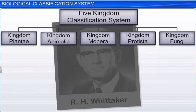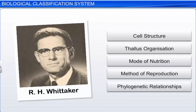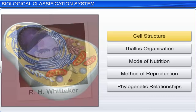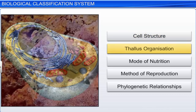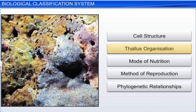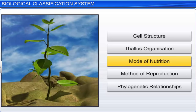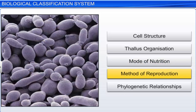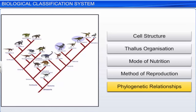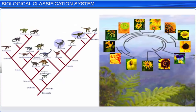Whittaker added three more kingdoms — Monera, Protista, and Fungi — to the existing kingdoms of Plantae and Animalia. The main criteria that Whittaker used for this classification system were cell structure, thallus organization, mode of nutrition, methods of reproduction, and phylogenetic relationships. Phylogenetics is the study of evolutionary relatedness among various groups of organisms.